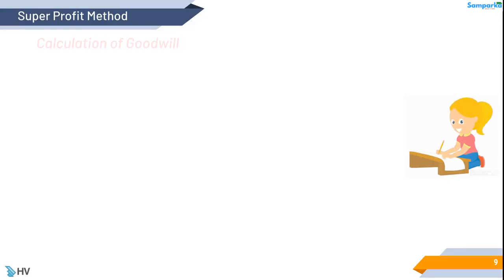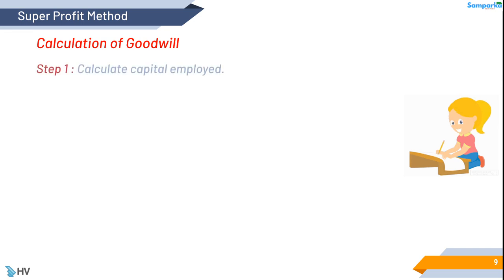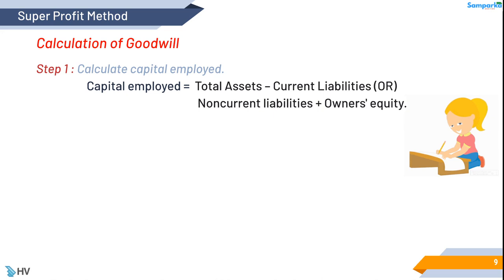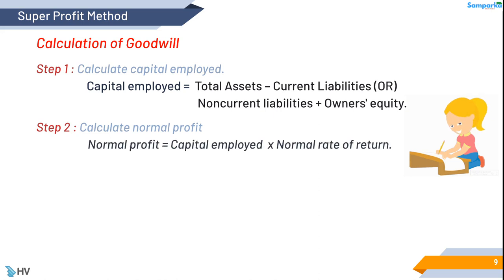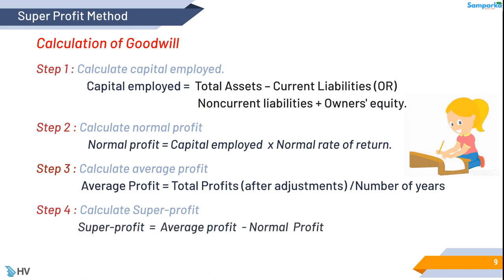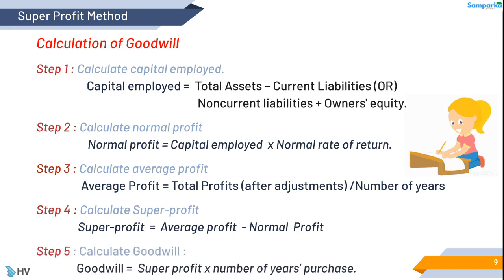Super profit method: calculation of goodwill. Step 1 — calculate capital employed; capital employed equals total assets minus current liabilities or non-current liabilities plus owner's equity. Step 2 — calculate normal profit; normal profit equals capital employed multiplied by normal rate of return. Step 3 — calculate average profit; average profit equals total profits after adjustments divided by number of years. Step 4 — calculate super profit; super profit equals average profit minus normal profit. Step 5 — calculate goodwill; goodwill equals super profit multiplied by number of years of purchase.